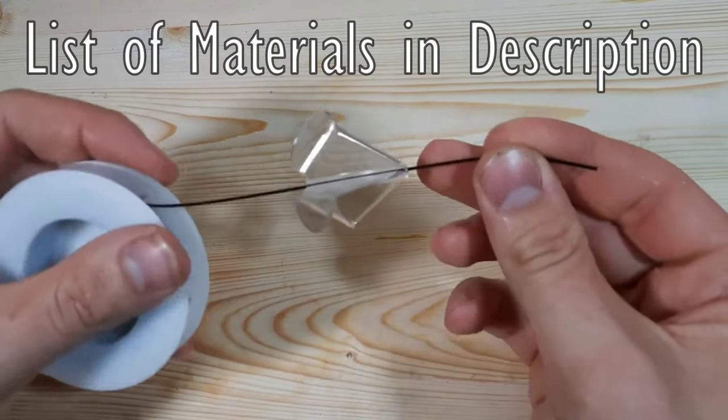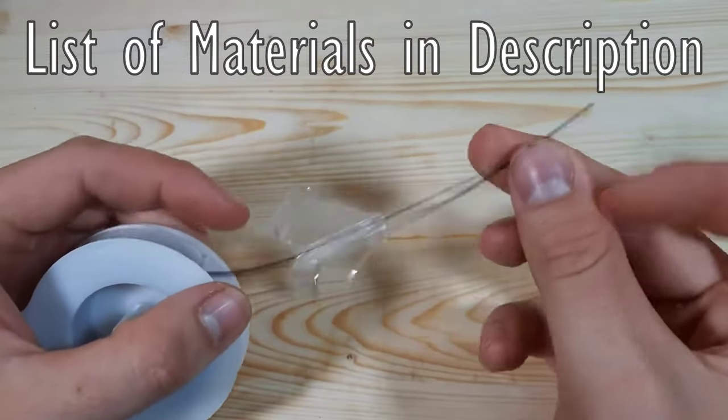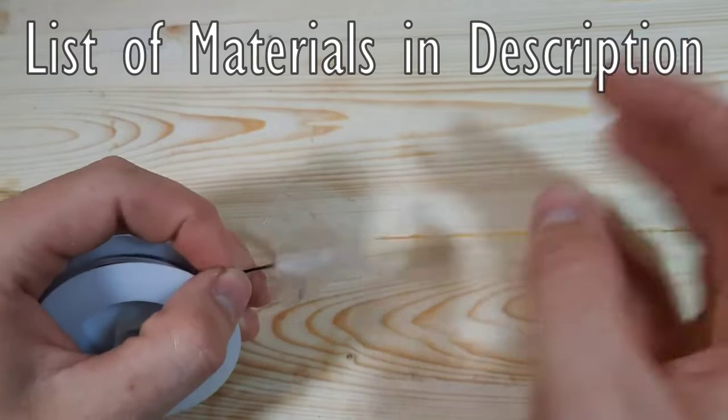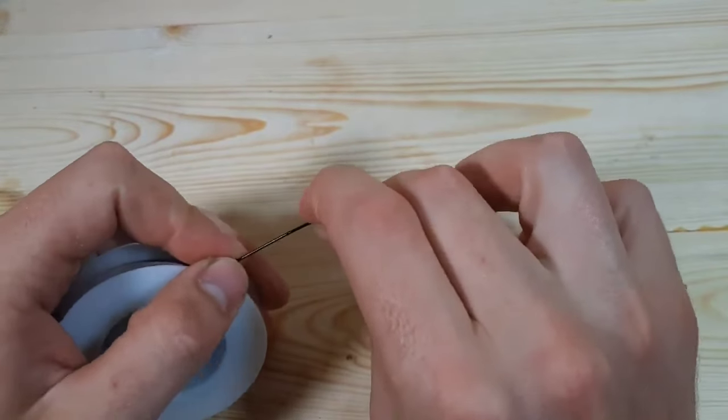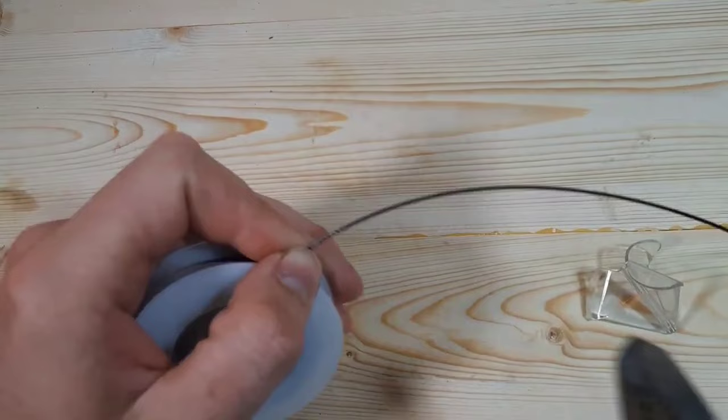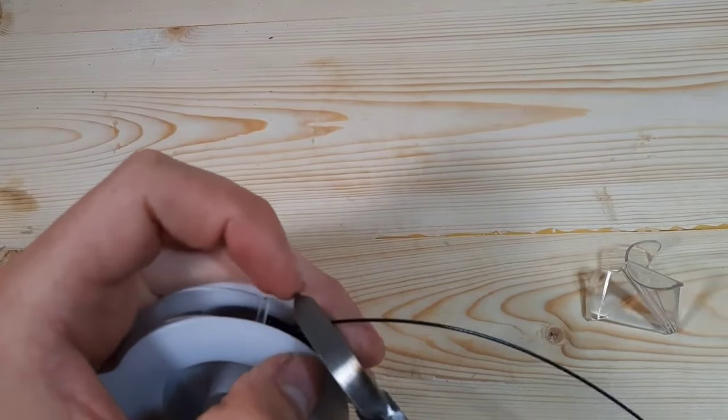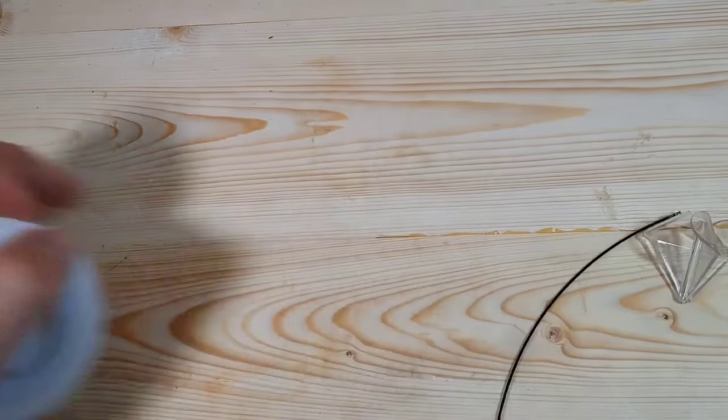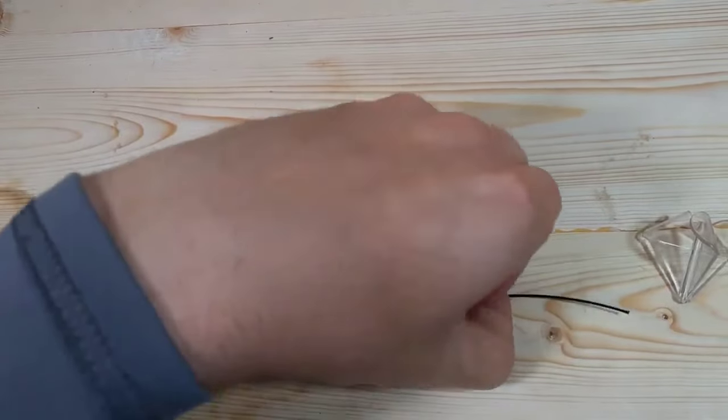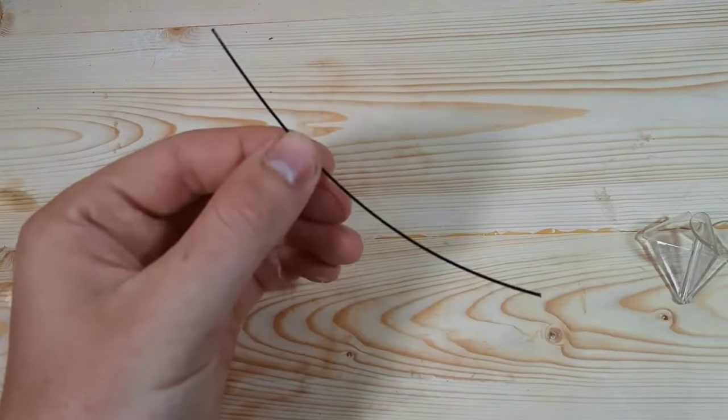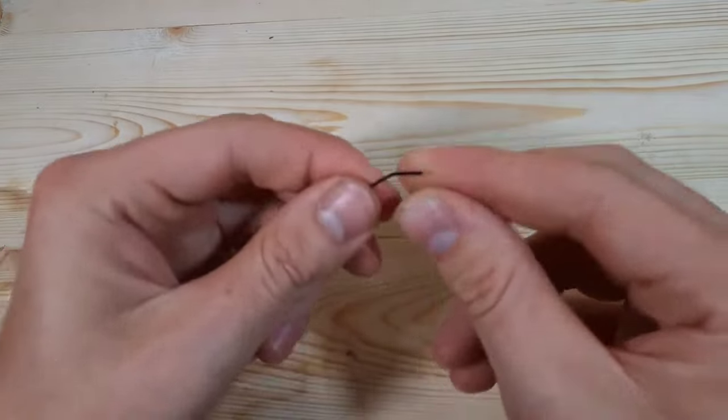We're going to start by measuring the line we need. You always want to have a little bit extra just in case you mess something up. Once it's cut you cannot add any more, so keep that in mind. My crimping tool also has a cutter on it which is actually really sharp and it cuts this line really well. Remember that you'll have a crimp sleeve on each end, so that's going to take up some line too.